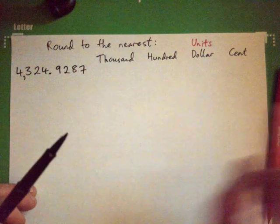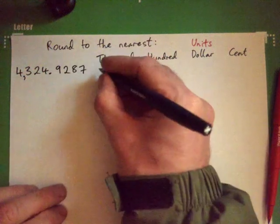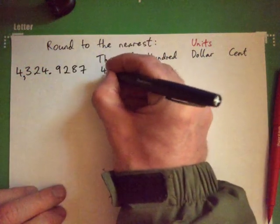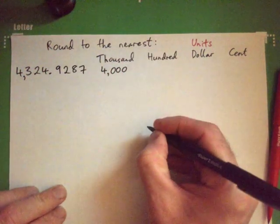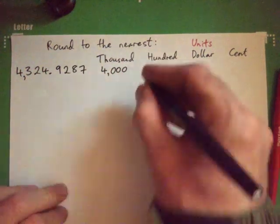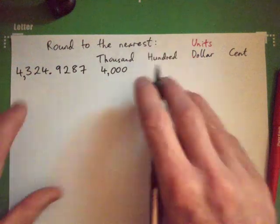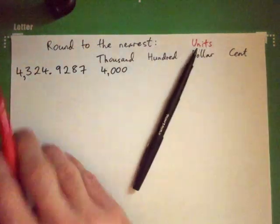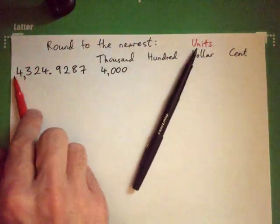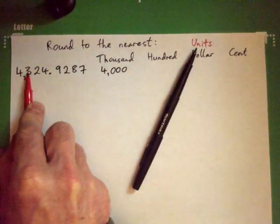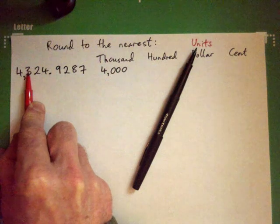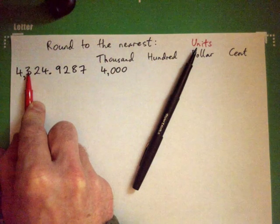So to the nearest thousand, that's 4,000. To the nearest hundred — because after the four, there occurs a three, and so we need to round down.